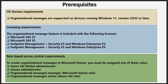The first prerequisite is the operating system version: organizational messages are supported on devices running Windows 11 version 22H2 or later. For licensing, the feature supports Microsoft 365 E3, E5, EMS E3 and Windows E3, as well as EMS E5 and Windows E5 licenses. For role-based access control, to create organizational messages in Intune you must be assigned one of the following roles: Azure Active Directory Global Administrator, Intune Administrator, Organizational Message Manager, or Organizational Message Writer.